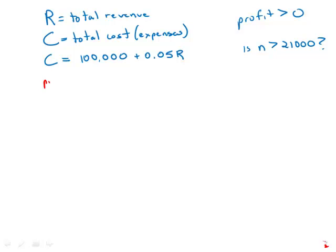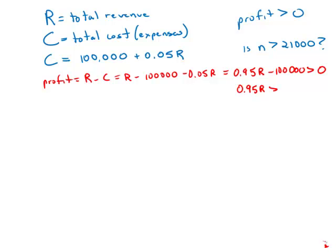Now of course, profit equals revenue minus cost. So revenue minus $100,000 minus 0.05R. So R minus 0.05R is 0.95R minus 100,000, and this has to be greater than zero. In other words, 95% of the revenue must be greater than 100,000. That's what we know from the given information.